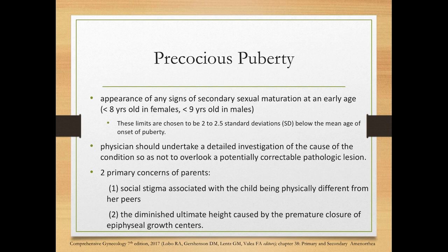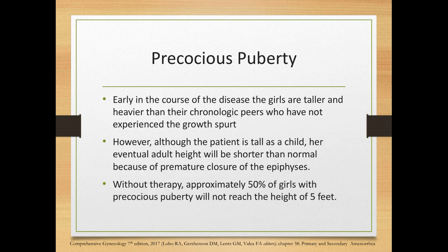There are two primary concerns for parents of children experiencing precocious puberty. First is the social stigma associated with the child being physically different from her peers. The second is the diminished ultimate height caused by premature closure of the epiphyseal growth centers. Although the girl may be taller than her chronologic peers early on, her eventual adult height will be shorter due to premature epiphyseal closure. Without therapy, approximately 50% of girls with precocious puberty will not reach a height of 5 feet.